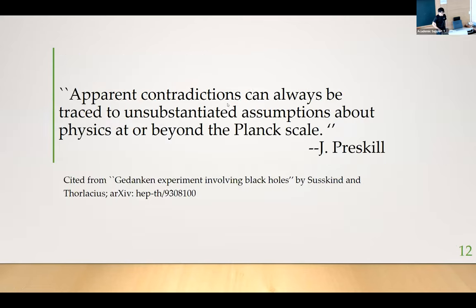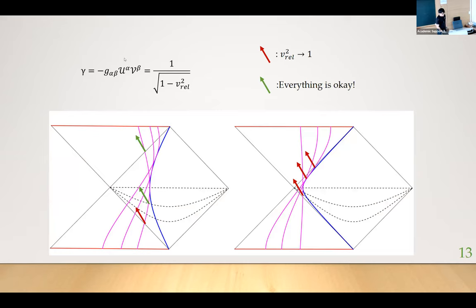I found this quote in this paper, Gedanken experiment involved black hole. There is a quote from Preskill, apparent contradiction can always be traced to unsubstantiated assumptions about physics at or beyond the Planck scale. So there must be something we should happen. The one we think of is still like a follow this gamma factor.